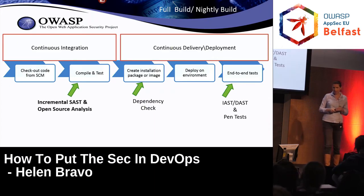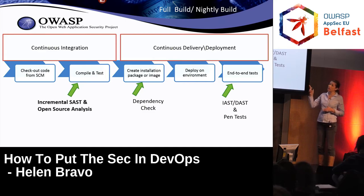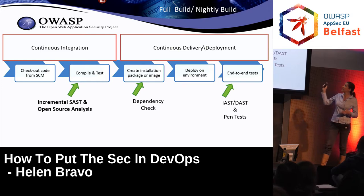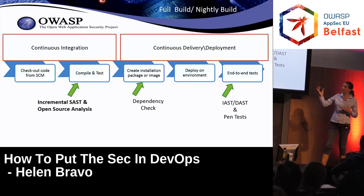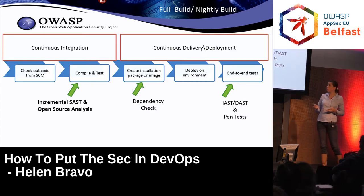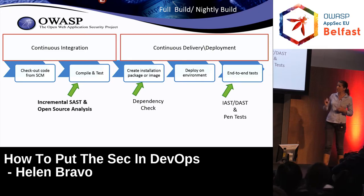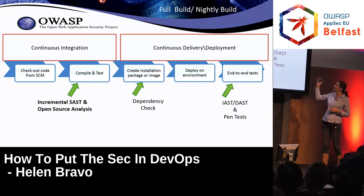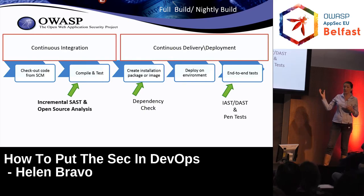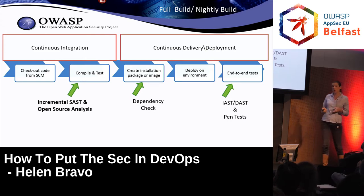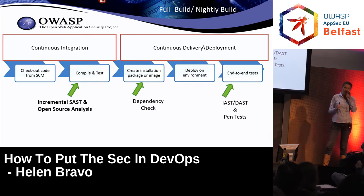You may want to run checkers both at the Docker image stage and in previous stages. The continuous integration part is very important because it happens much more often than continuous deployment. For those not doing continuous deployment — which is the majority of projects — CI happens much more often. Usually CI runs a few times a day, while the CD process might be once a day as a nightly build, or once a week for certain projects.